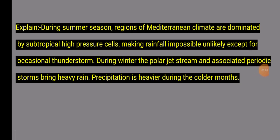Question 41 Explanation: During the summer season, regions of Mediterranean climate are dominated by subtropical high pressure cells, making rainfall impossible or unlikely except for occasional thunderstorms. During the winter, the polar jet stream and associated periodic storms bring heavy rain. Precipitation is heavier during the colder months.